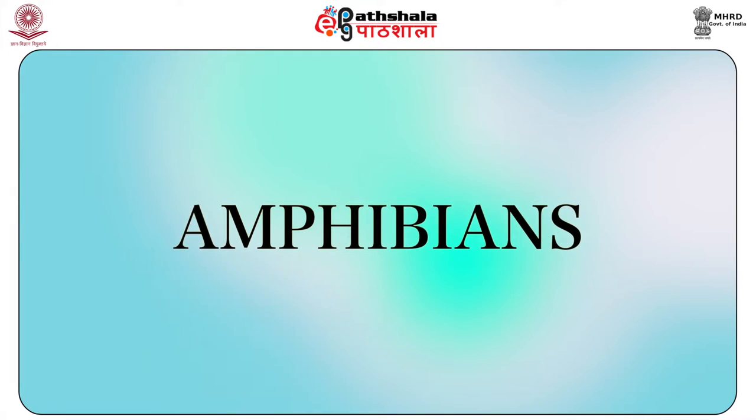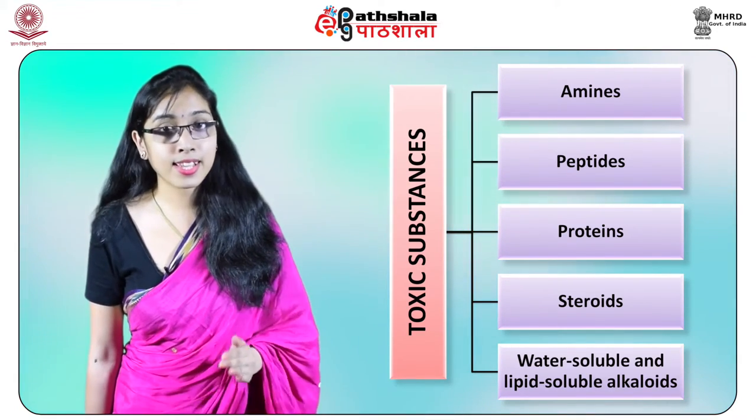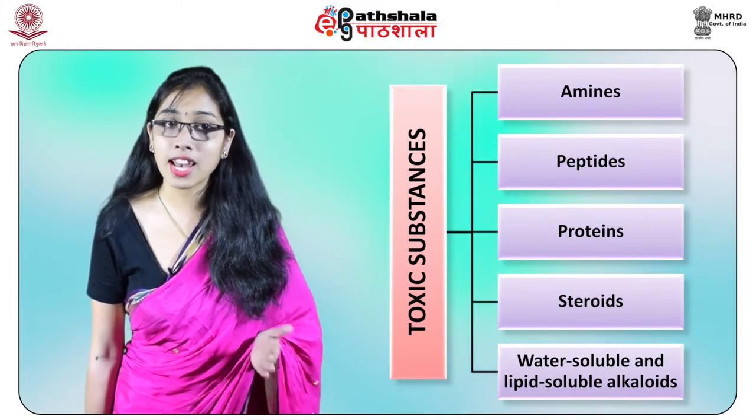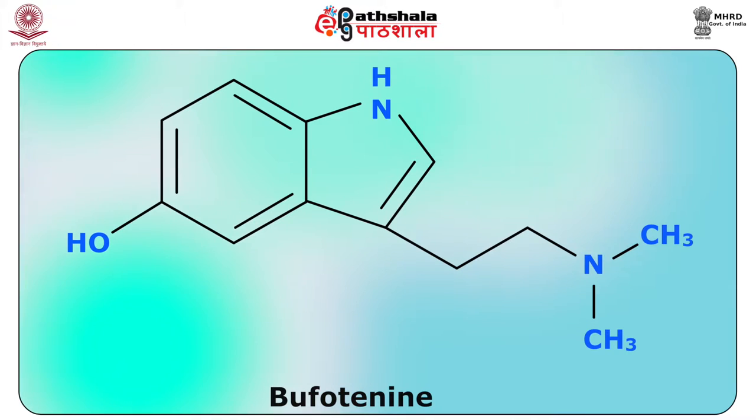Next we will study about amphibians. Of the amphibians, toads are of foremost interest to the toxicologist because a number of species produce nauseous substances in their dermal glands. These compounds include amines, peptides, proteins, steroids and both water-soluble and lipid-soluble alkaloids. With the exception of the last, these substances are produced by the toad itself rather than bioaccumulated. The genus Bufo emanates the alkaloid bufotenine, that is NN-dimethyl-5-hydroxytryptamine.